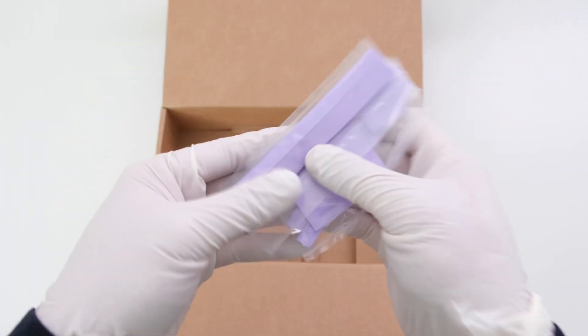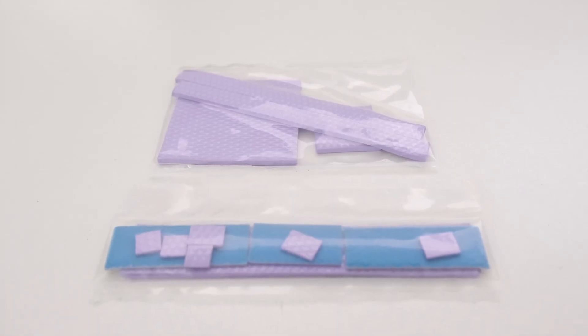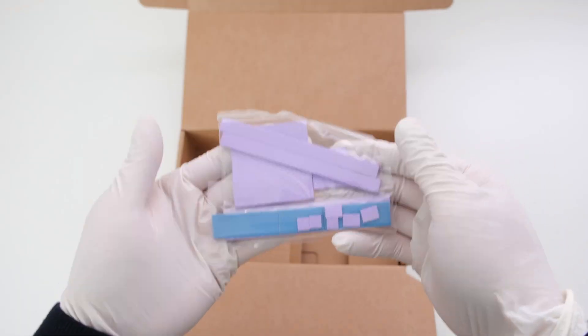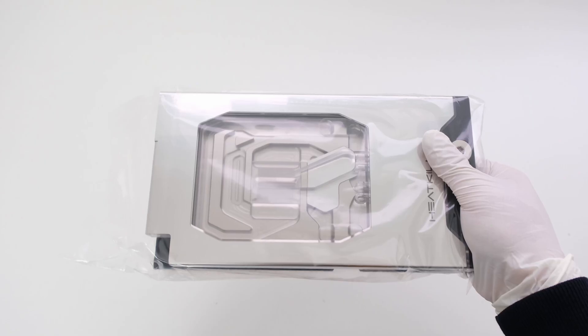There are two packages of thermal pads, one set for the front side of the PCB and another set for the back plate. What's left is a Heat Killer 5 water block.